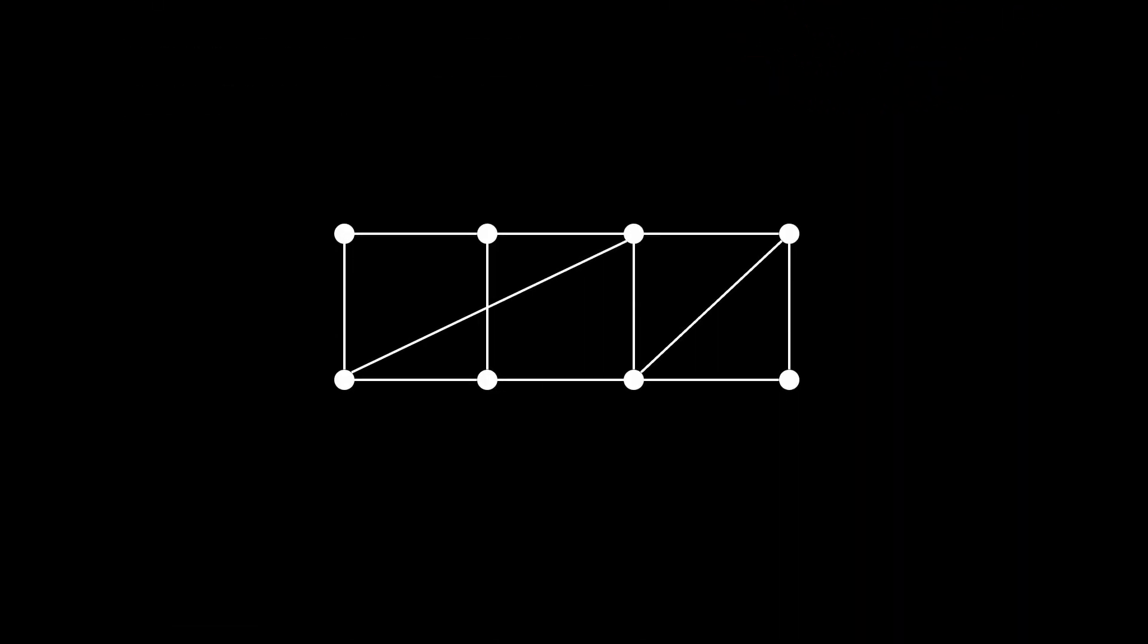We now consider a counterintuitive modification of our previous algorithm. Whenever we select a new edge, instead of just adding one of the endpoints to our vertex cover, we add both. How could such a wasteful strategy possibly be better? Let's see how it pans out.